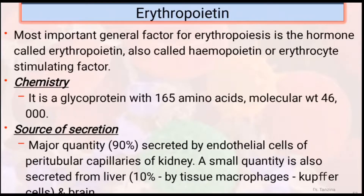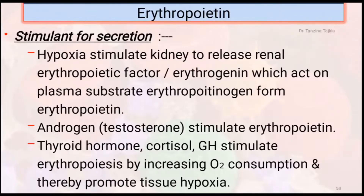Let's discuss erythropoietin elaborately. It is the most important general factor for erythropoiesis. It is a glycoprotein mainly secreted from the endothelial cells of peritubular capillaries of the kidney — that means 90 percent — and 10 percent from the liver. Hypoxia stimulates the kidney to release renal erythropoietic factor. Androgen also stimulates erythropoietin, and thyroid hormone, cortisol, and growth hormone also stimulate erythropoiesis.